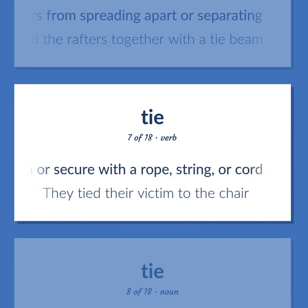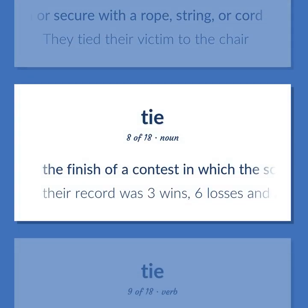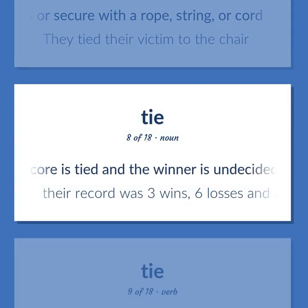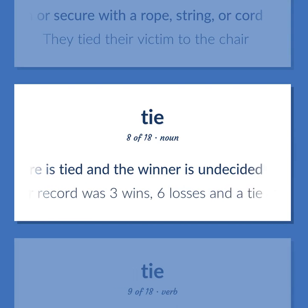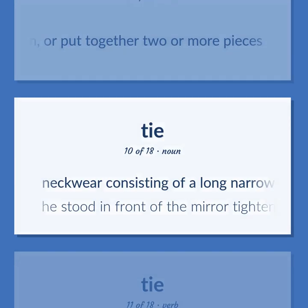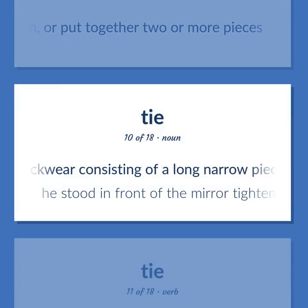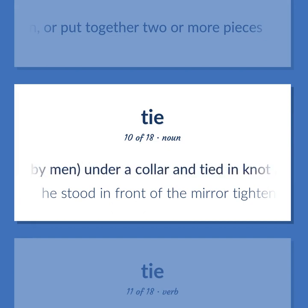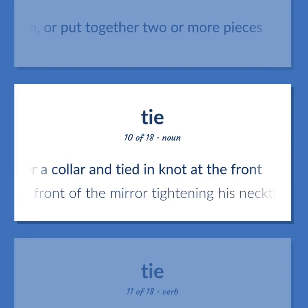They tied their victim to the chair. The finish of a contest in which the score is tied and the winner is undecided. Their record was three wins, six losses and a tie. Connect, fasten, or put together two or more pieces. Neckwear consisting of a long narrow piece of material worn, mostly by men, under a collar and tied in a knot at the front. He stood in front of the mirror tightening his necktie.